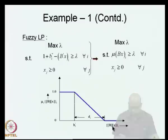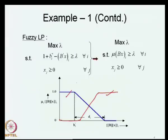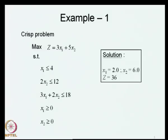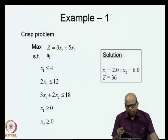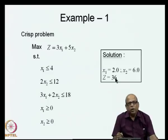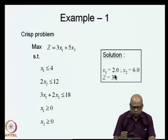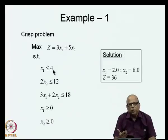The type of membership function we consider can be either decreasing—where lower is better—or increasing—where higher is better. So you can have either type. We will look at this problem again: z = 3x1 + 5x2, x1 ≤ 4, and so on. For z, we form the membership function based on the objective function value from the crisp solution, relax the constraints, give some latitude, and define the membership functions accordingly.